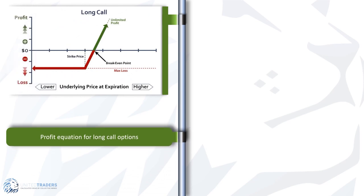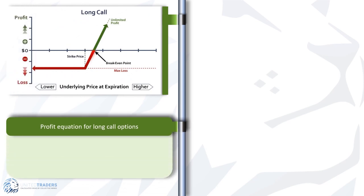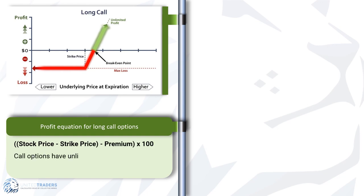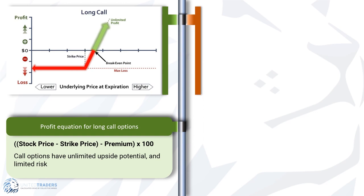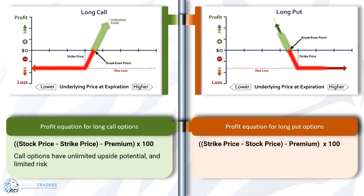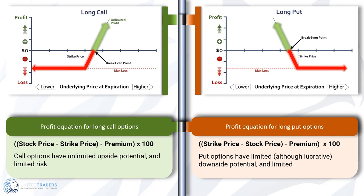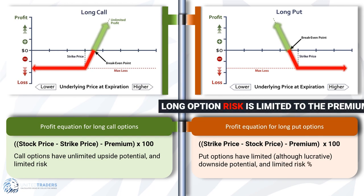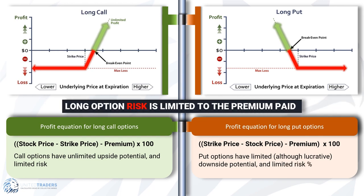The profit equation for a long call option is: Profit = (Stock price − Strike price − Premium) × 100. Call options have unlimited upside potential and limited risk. The profit equation for long put options is: Profit = (Strike price − Stock price − Premium) × 100. Put options have limited, although lucrative, downside potential and limited risk. Long option risk is limited to the premium paid.